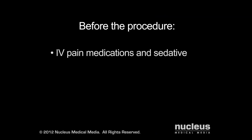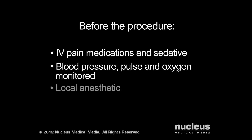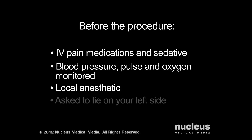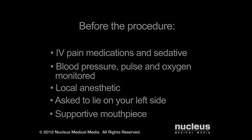Before the endoscopy, an intravenous line will be started and you will be offered pain medication and a sedative. Your blood pressure, pulse, and the oxygen level in your blood will be monitored during the procedure. Your doctor may spray your throat or have you gargle with a local anesthetic that will numb it. You will be asked to lie on your left side and a supportive mouthpiece will be placed in your mouth. In some cases, you may be given supplemental oxygen through a nasal cannula.